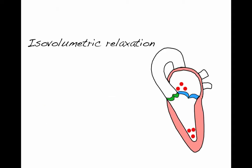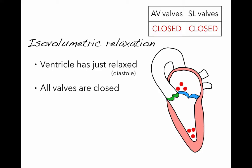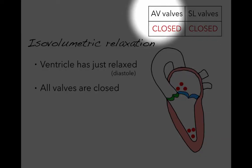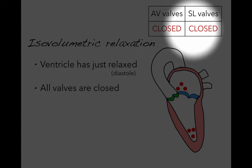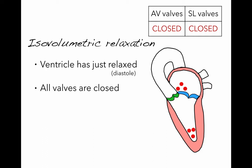Let's look at the first phase. I like to start at iso-volumetric relaxation. The blood in the ventricle is not changing — we're not adding blood into the ventricle because the atrial ventricular valves are closed. This phase starts just as the ventricle has relaxed, so it's in diastole, and all valves are closed. I'll indicate the atrial ventricular valves and semilunar valves being open or closed, and you'll see this changes as we go through the different phases.